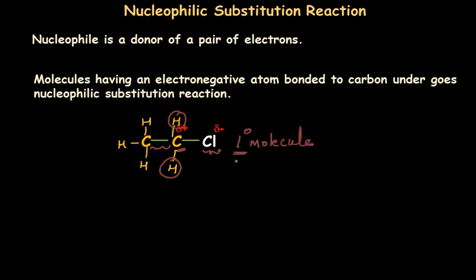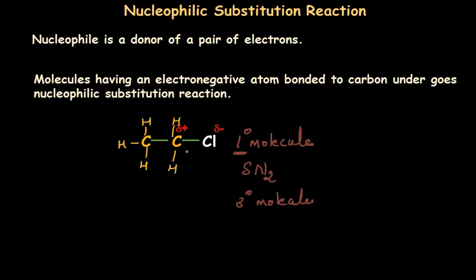It is very important to know that such a molecule, which is a primary haloalkane or primary alcohol, will undergo SN2 mechanism. In our next video, where we will learn about SN1 mechanism, we will understand what tertiary molecules are. Primary molecules are the molecules in which an electronegative atom is bonded to a carbon, that carbon should be bonded to only one more carbon, and the other two bonds should be occupied by hydrogen. Such molecules undergo SN2 mechanism.